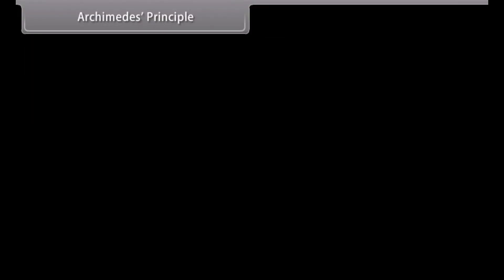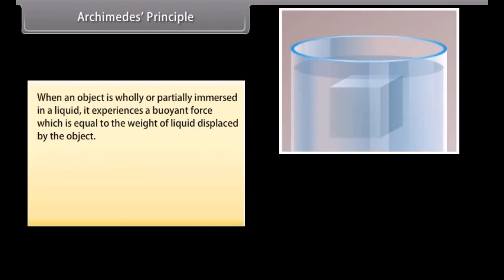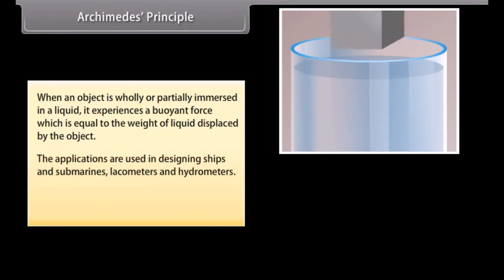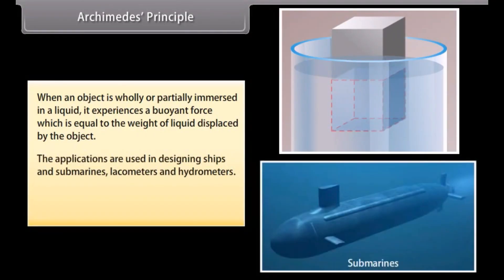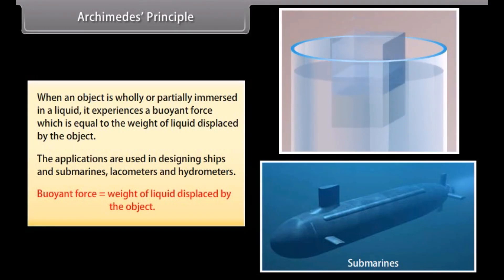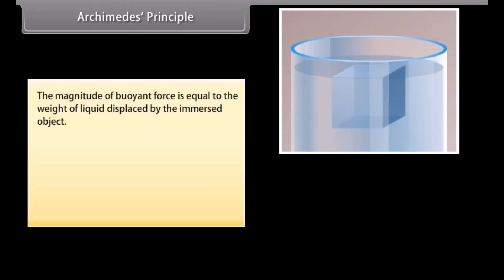Archimedes' principle. When an object is wholly or partially immersed in a liquid, it experiences a buoyant force which is equal to the weight of liquid displaced by the object. Applications include designing ships and submarines, lactometers, and hydrometers. Buoyant force equals the weight of liquid displaced by the object; the magnitude of buoyant force equals the weight of liquid displaced by the immersed object.